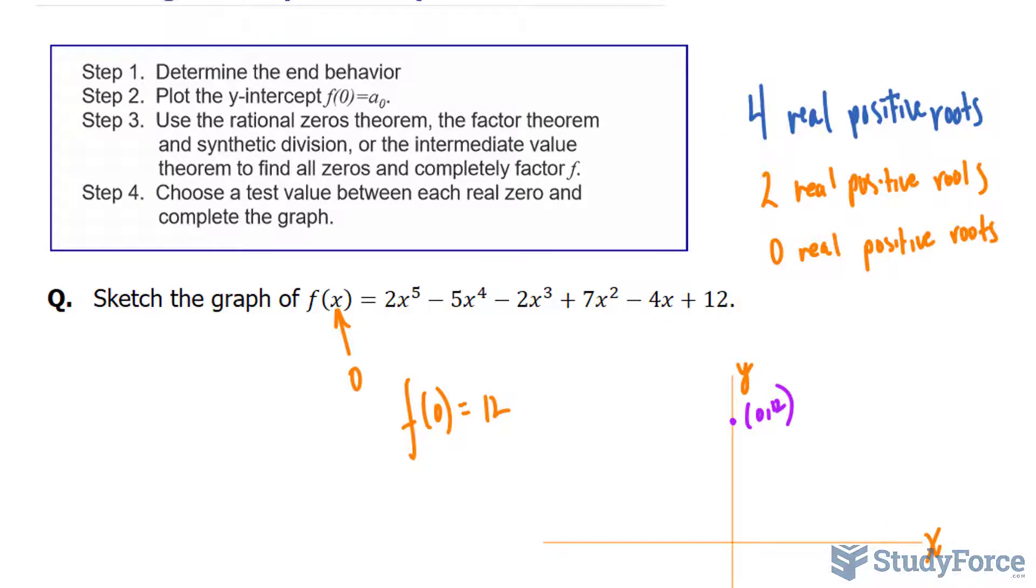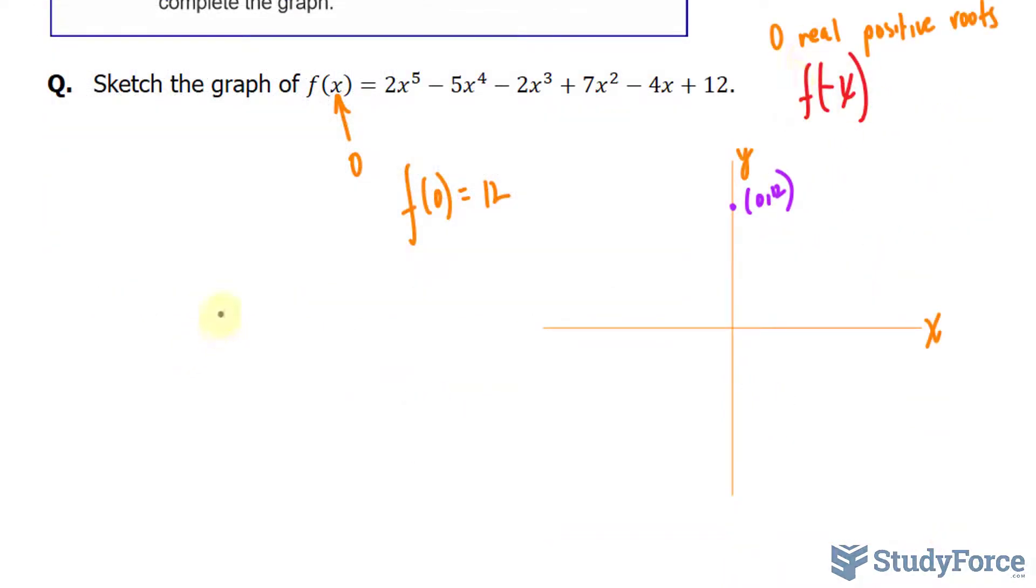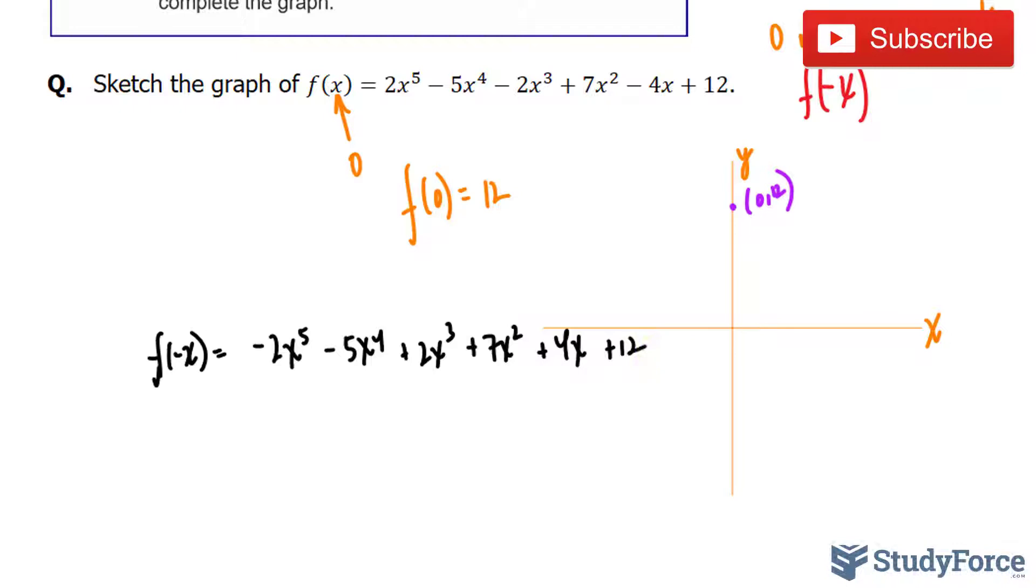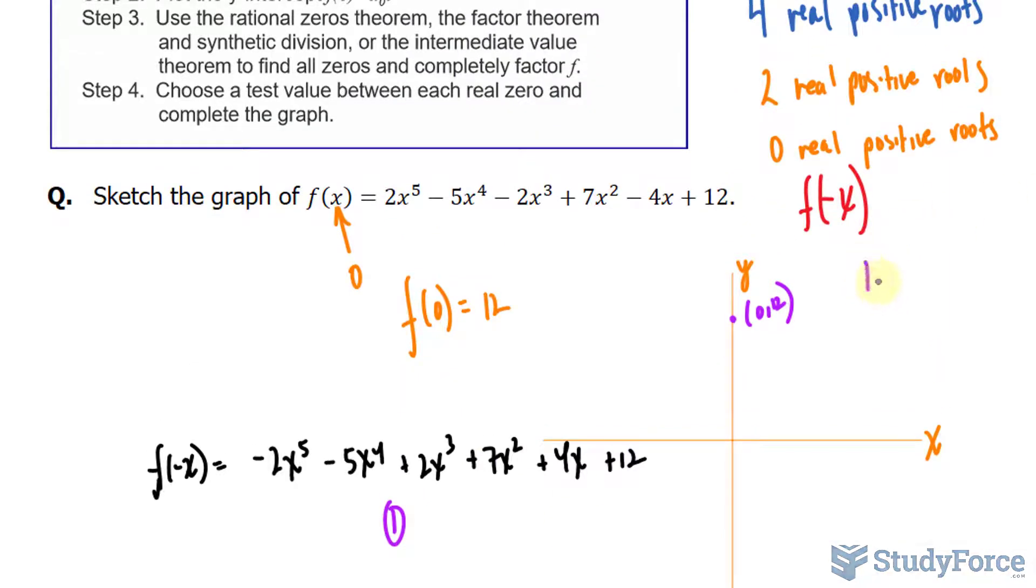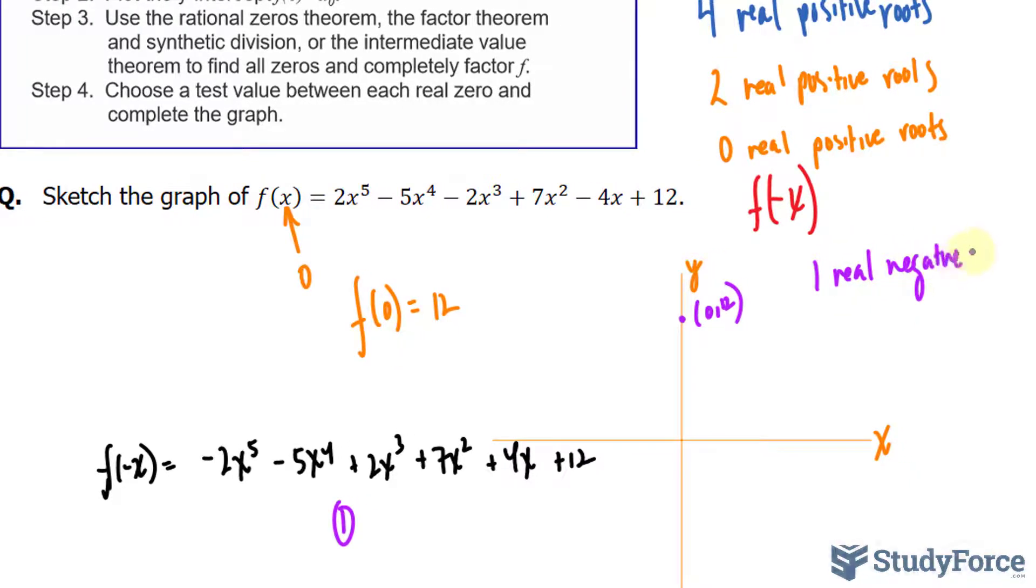Another part of Descartes' rule of signs is that if we substitute negative x into our function, and we repeat the process, that will tell us how many negative real zeros it could have. So substituting negative x, let's write that down, right here. That makes this negative 2x to the power of 5. That makes that negative 5x to the power of 4. This is positive 2x to the power of 3. Positive 7x to the power of 2. Positive 4x and plus 12. So taking a look at the sign changes, this goes from negative to negative, so none so far. That's one change. No, no, and no. So there is exactly one real negative root.